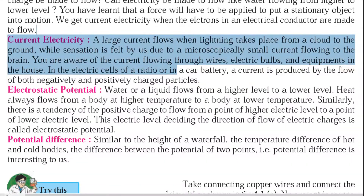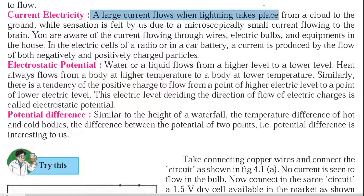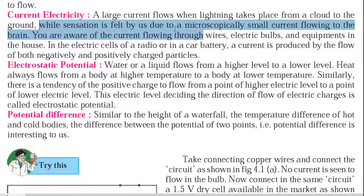The power of current electricity is significant. A large current flows when lightning takes place from a cloud to the ground. Similarly, when a sensation is received, a small current flows to the brain.